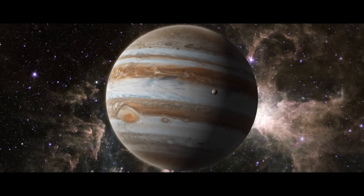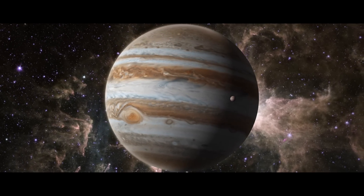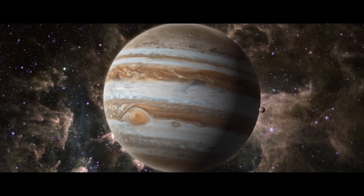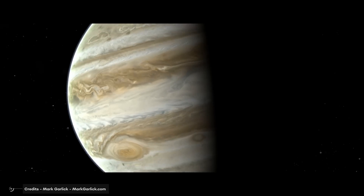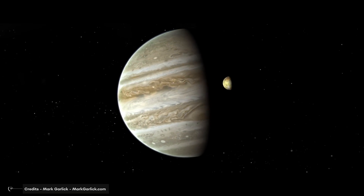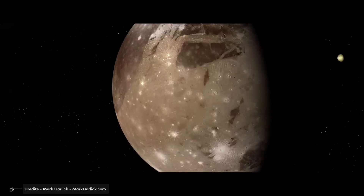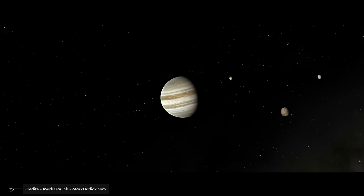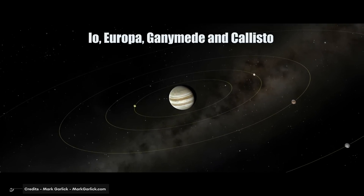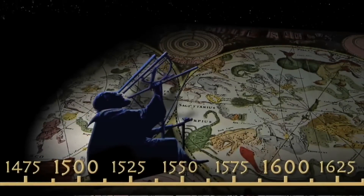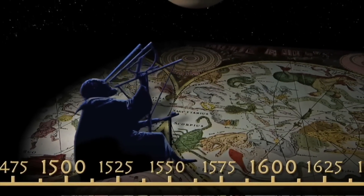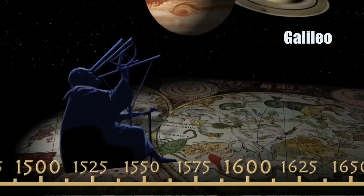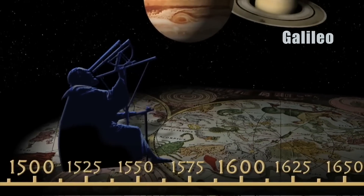Bringing together Jupiter and the objects in its sphere of influence, the Jovian system is a major component of the outer solar system. It first includes the large number of moons that Jupiter is hosting and, in particular, the four Galilean satellites — Io, Europa, Ganymede, and Callisto — which were observed for the first time in 1610 by Galileo using his telescope, making them the first objects discovered in the history of astronomy.